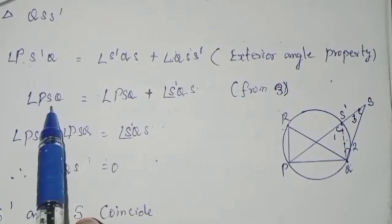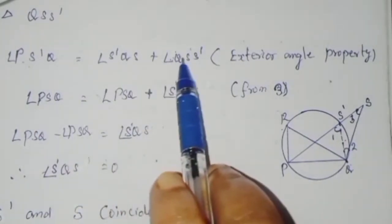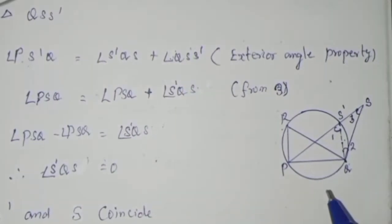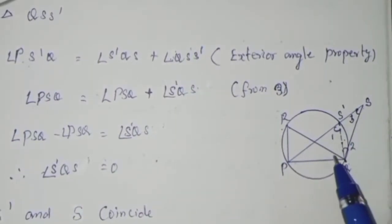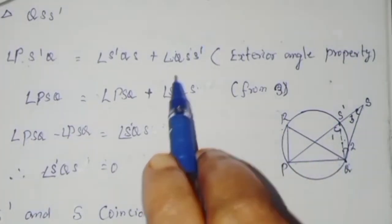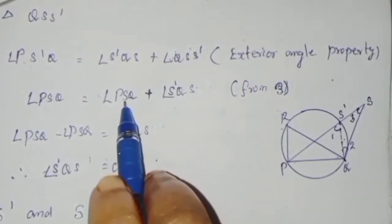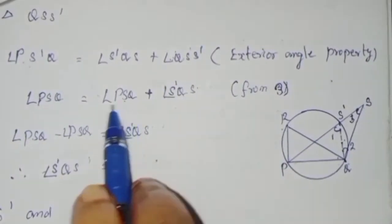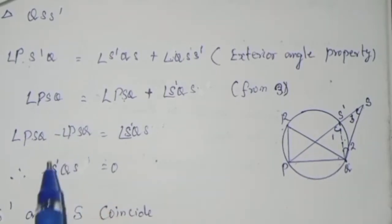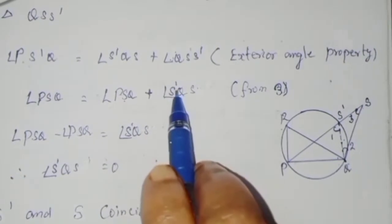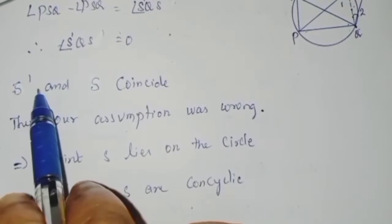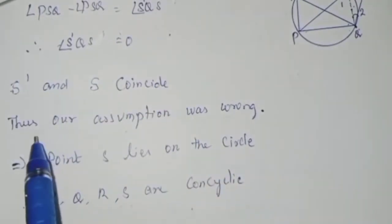Now we substitute angle PSQ. From the third equation, angle PS'Q equals angle PSQ. So replacing: angle PSQ equals angle PSQ plus angle QSS'. The two angle PSQ terms subtract, leaving angle QSS' equal to 0. So S' and S coincide.